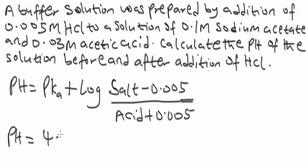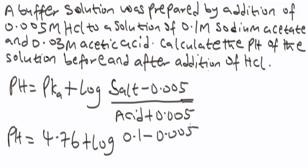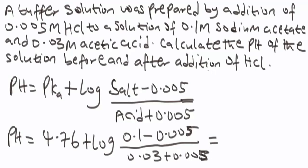So the pH = 4.76 + log((0.1 − 0.005) / (0.03 + 0.005)) = 4.76 + log(0.095 / 0.035). Calculating with a calculator gives pH = 5.19 (to two decimal places). This is the pH after addition of 0.005 mol of hydrochloric acid to the buffer solution.